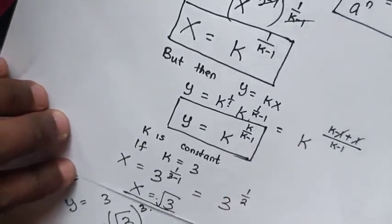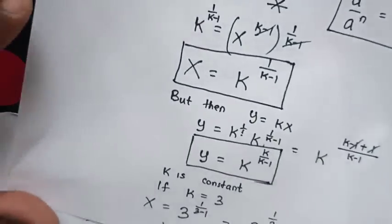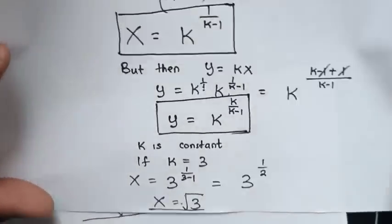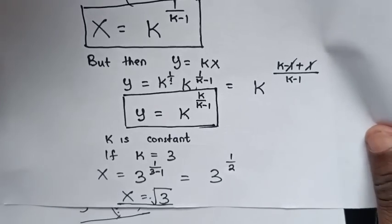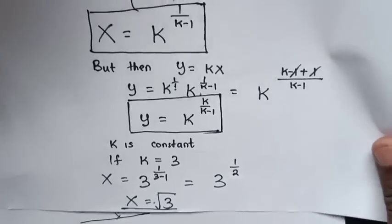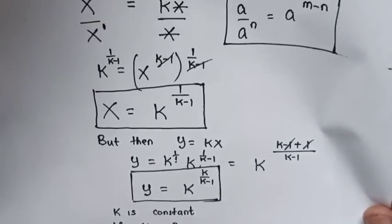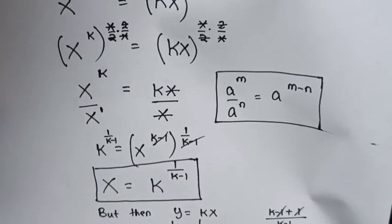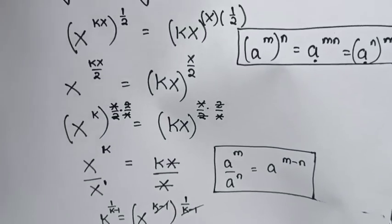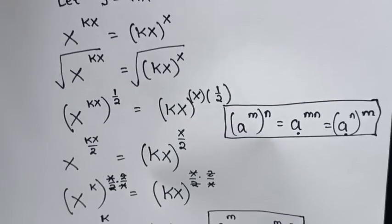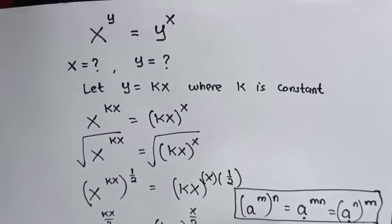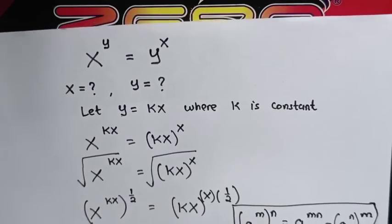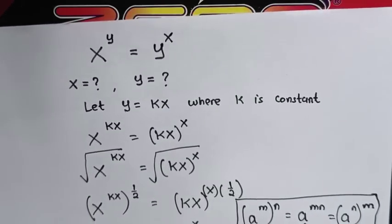The equation for x and y in terms of k is correct. Don't forget — subscribe to my channel and see you in the next video. Bye-bye.